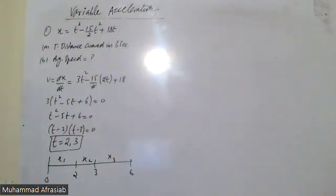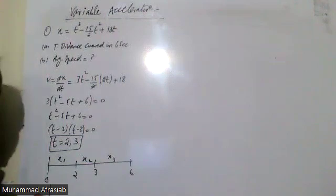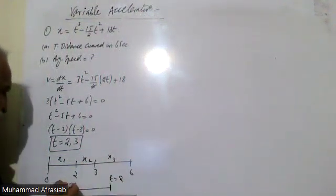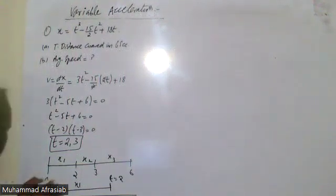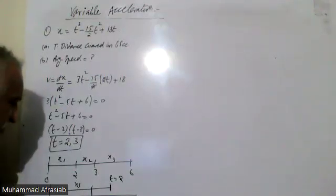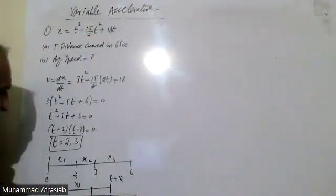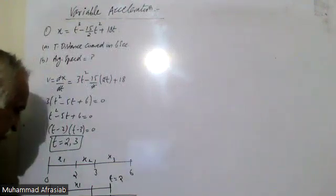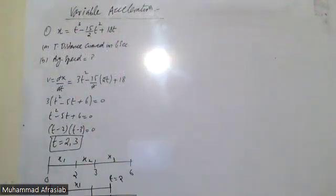Graphically, the particle starts from the origin. For the first 2 seconds it moves forward, covering a certain distance. Then from t = 2 to t = 3, it moves back, covering the second portion. Then at t = 6 the particle is at a new position — that is x3. So we calculate x1, x2, and x3.